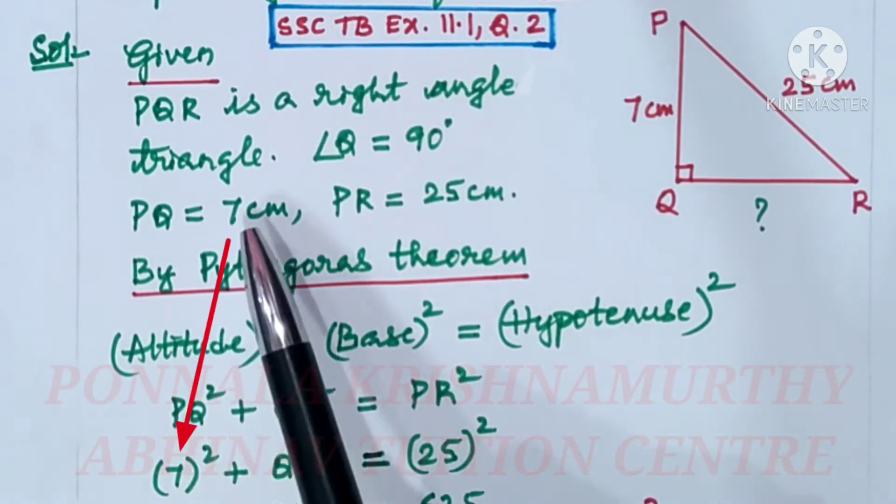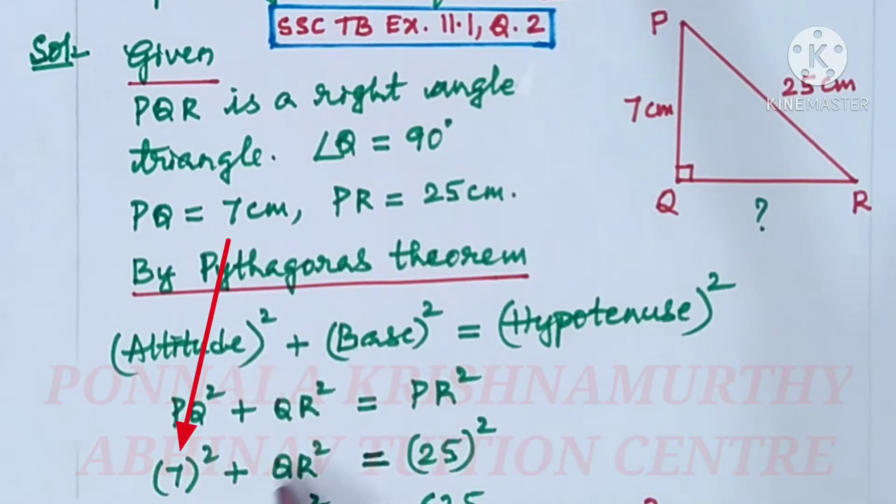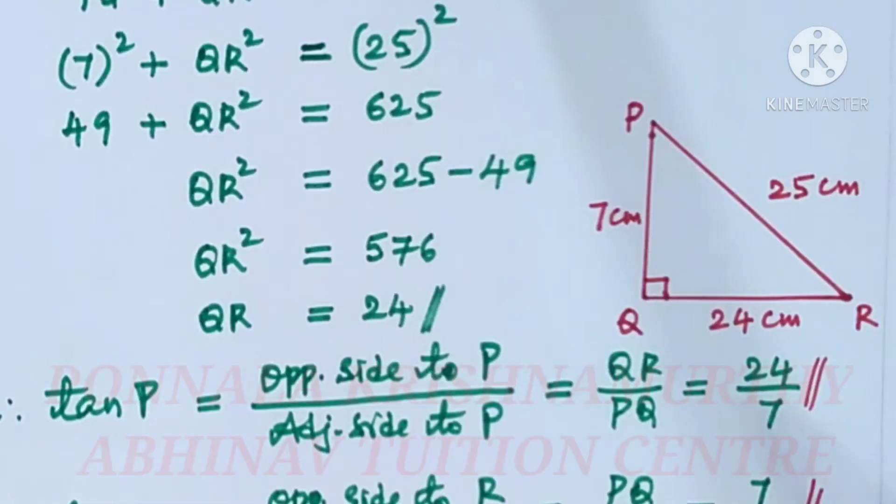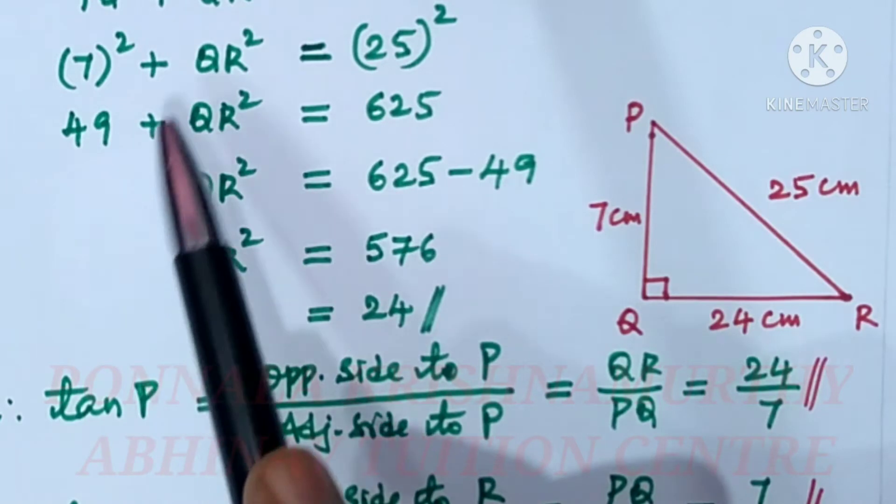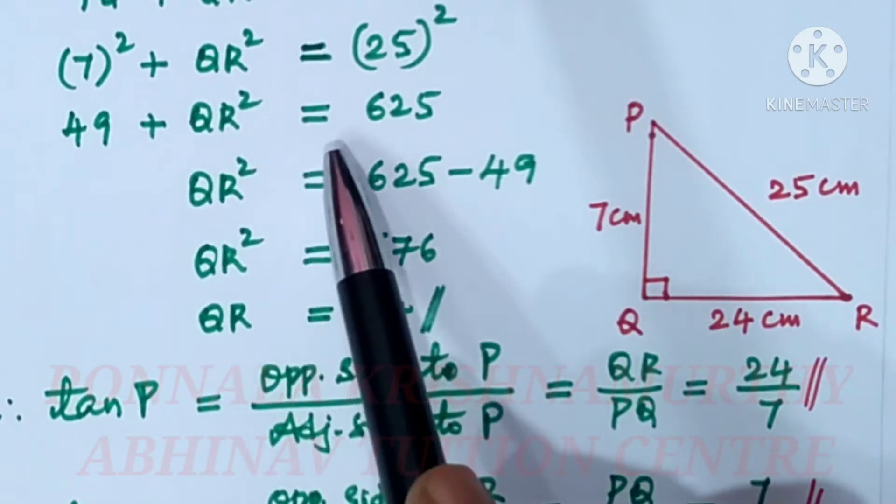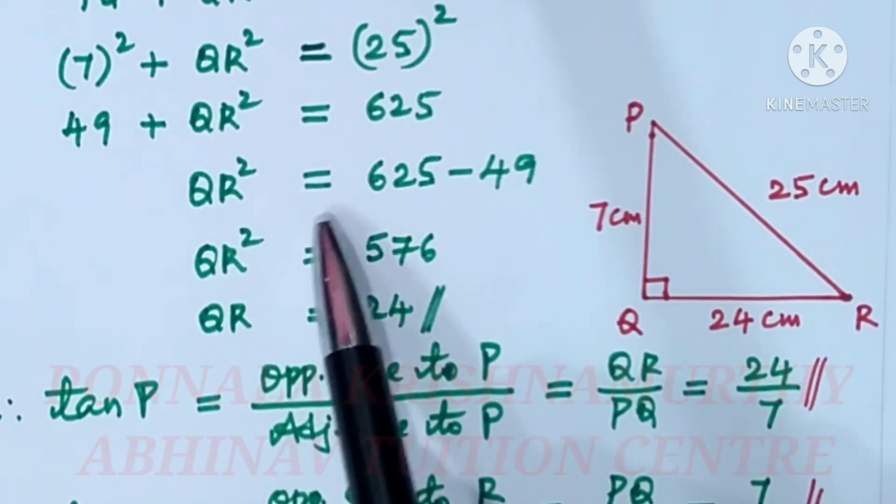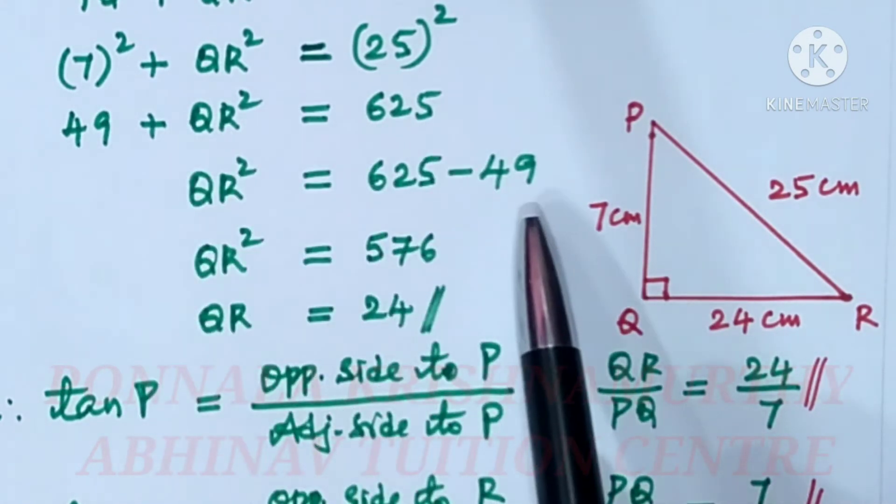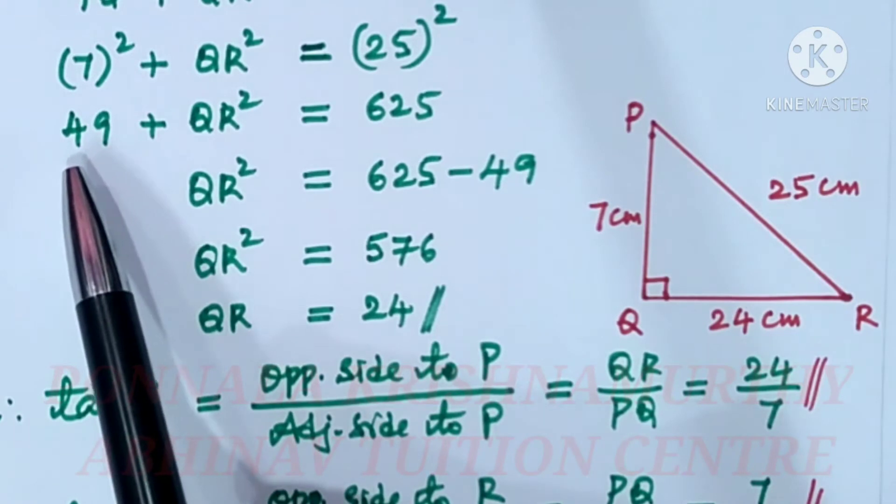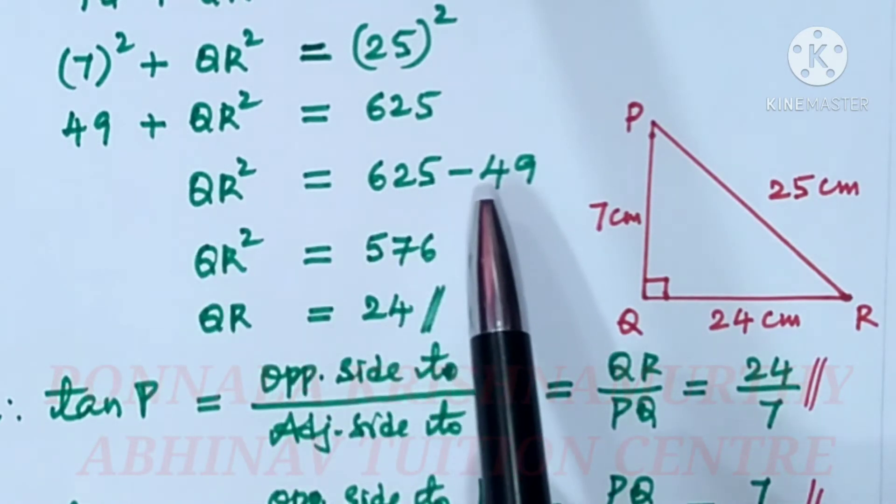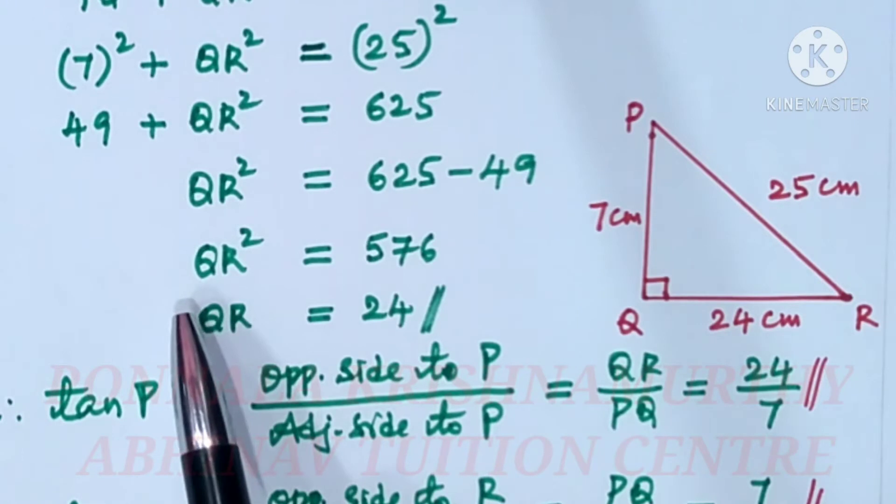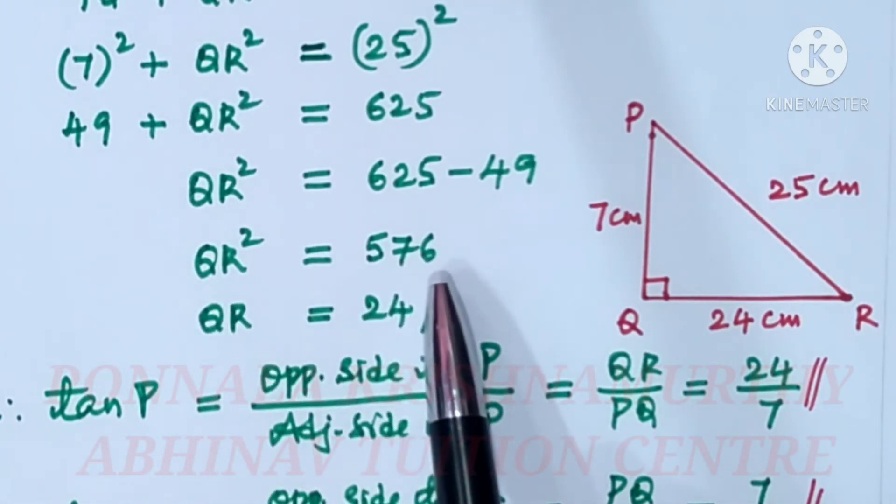PQ is 7, so 7 squared plus QR squared equals PR which is 25, so 25 squared. 7 squared is 49 plus QR squared equals 625. QR squared is equal to 625 minus 49. This plus 49 becomes minus 49 after coming to the right hand side. QR squared is equal to 576.